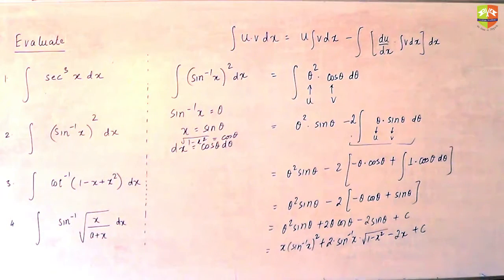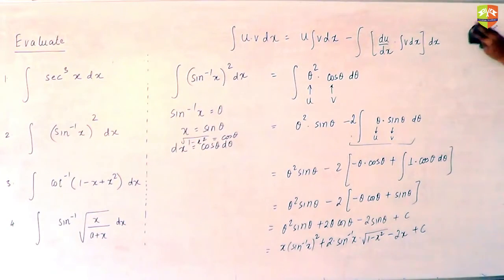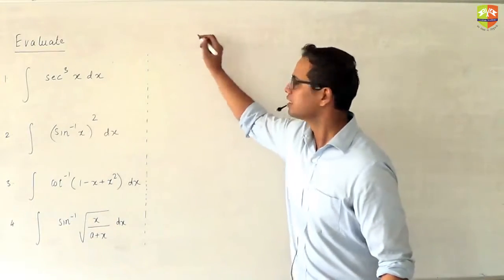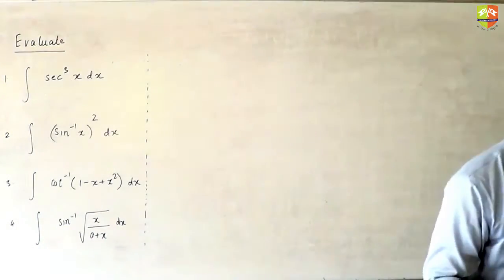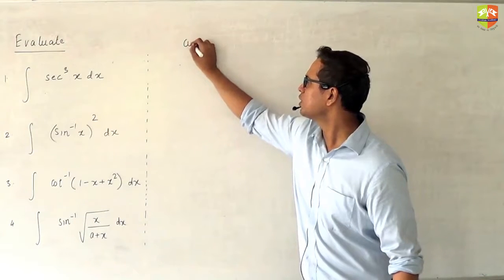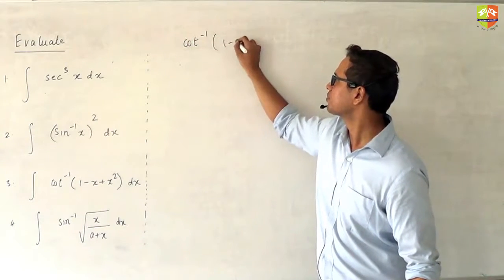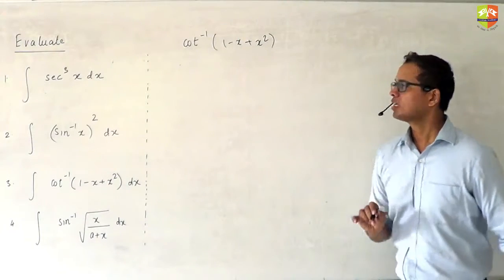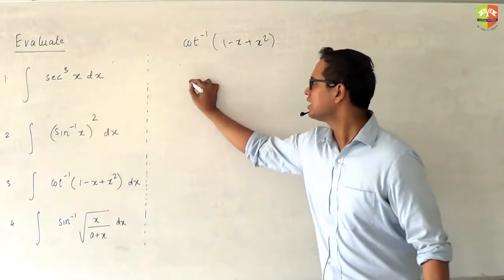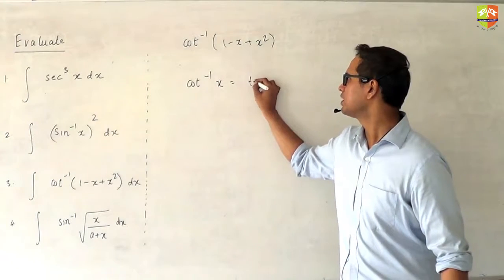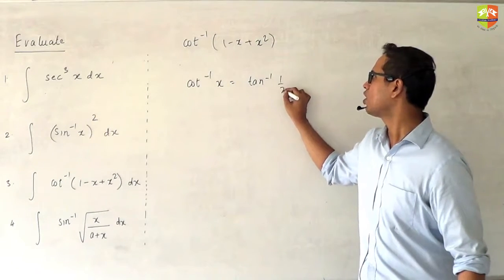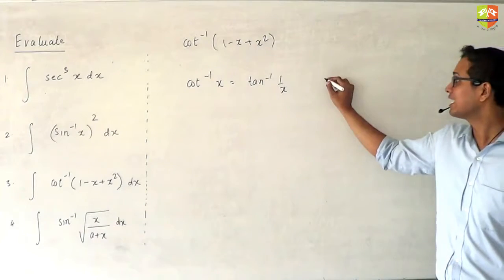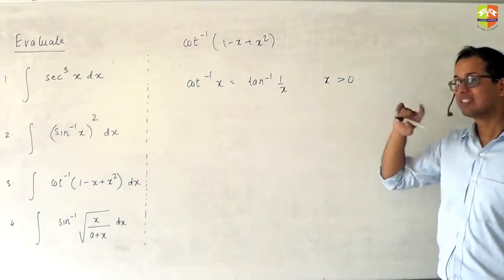These are school-level problems; after this we will start taking up JEE-level ones. For the third one, let's first do a quick analysis. Do you remember that in inverse trigonometry we had the formula: cot⁻¹x equals tan⁻¹(1/x), provided x is positive?